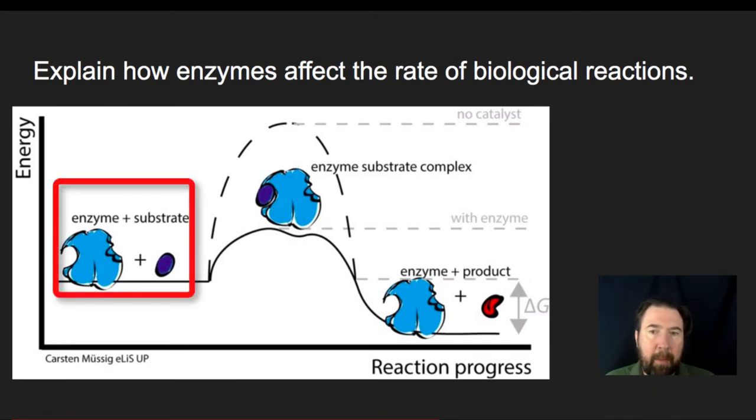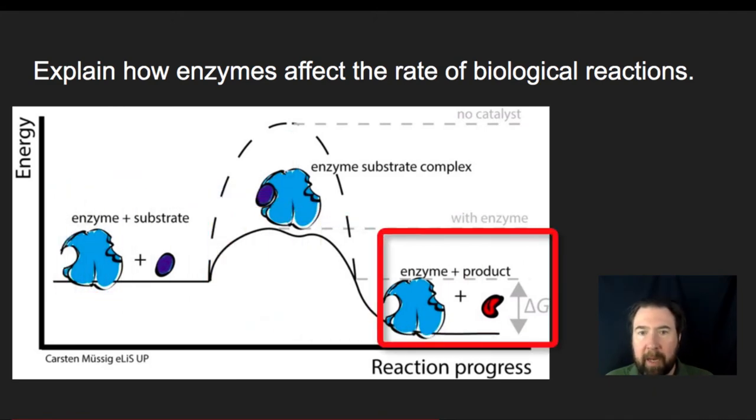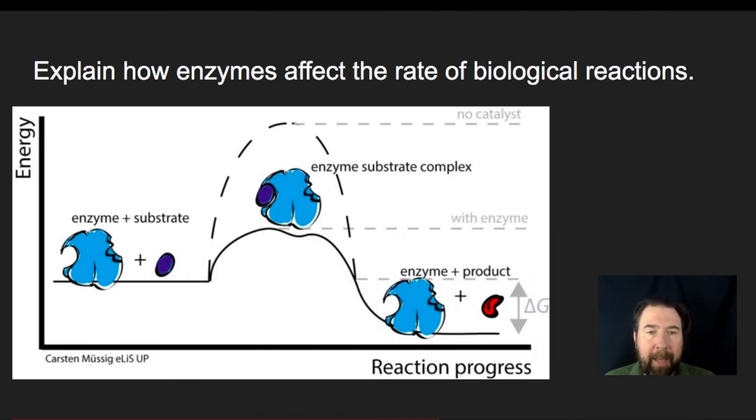This substrate that turns into this product is a downhill reaction. It's something that will happen and will release some energy. But with an enzyme, it requires less activation energy to get that reaction started than if the enzyme wasn't present.